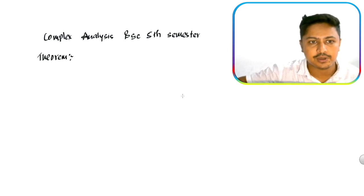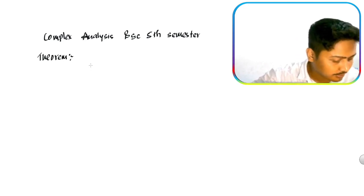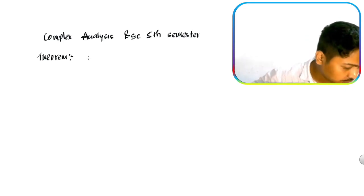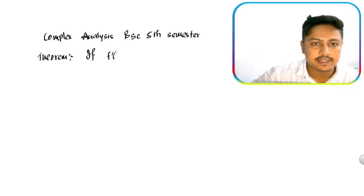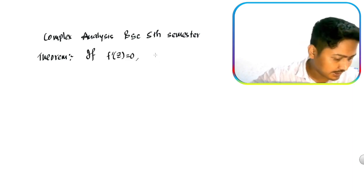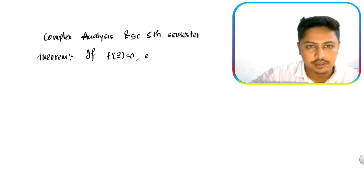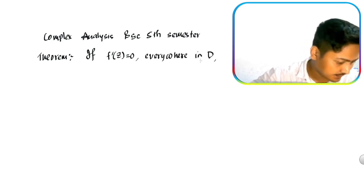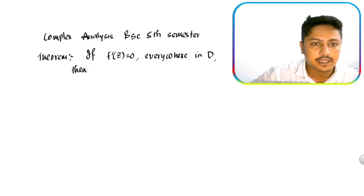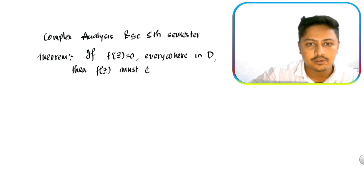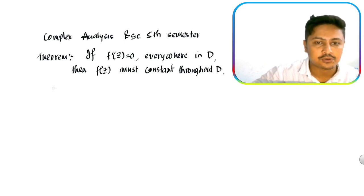So this is our statement — what we have to do and prove. If f'(z) is equal to zero every point in a certain domain, then f(z) must be constant throughout the domain D. So this is the theorem and this is the proof.